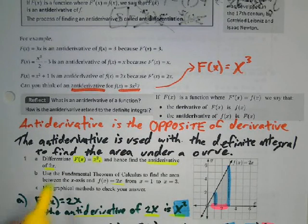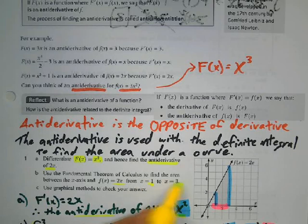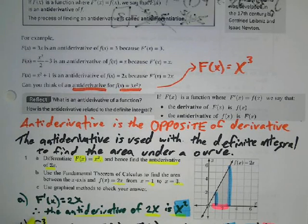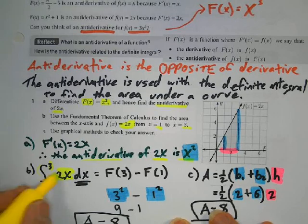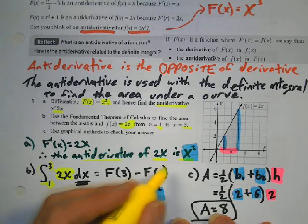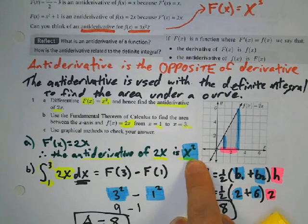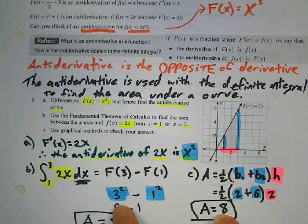Use the fundamental theorem of calculus to find the area of this. We're going to set the integral from 1 to 3, and my function is 2x. Taking the antiderivative gives us x squared. Plugging in 3 into x squared gives 3 squared, and plugging 1 into x squared gives 1 squared. So we have 3 squared minus 1 squared, which is 9 minus 1, which equals 8.